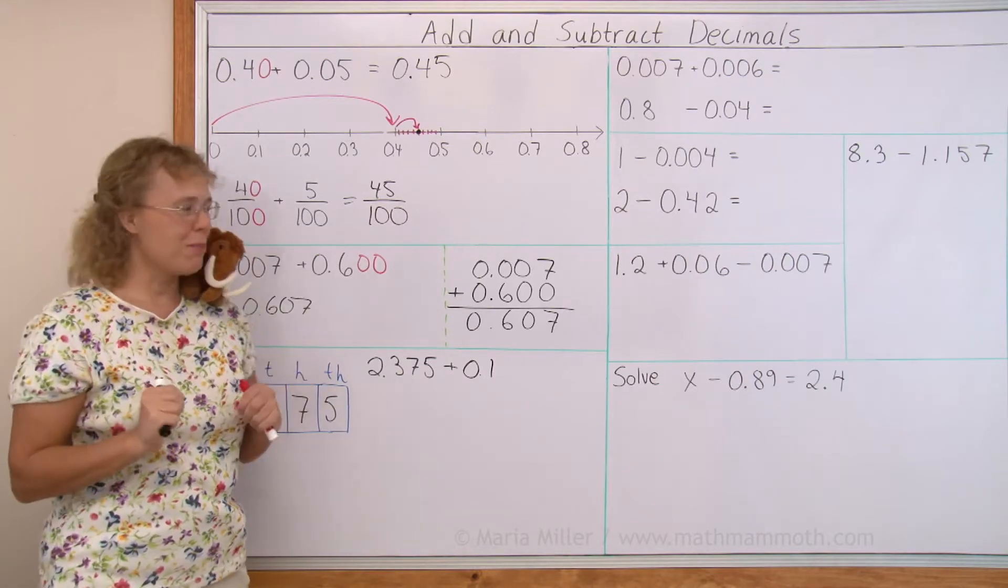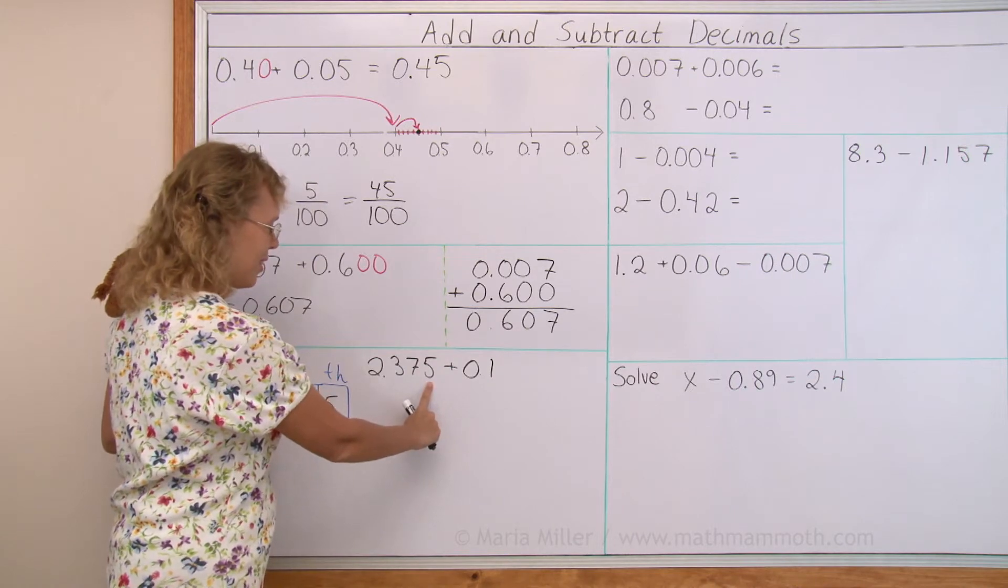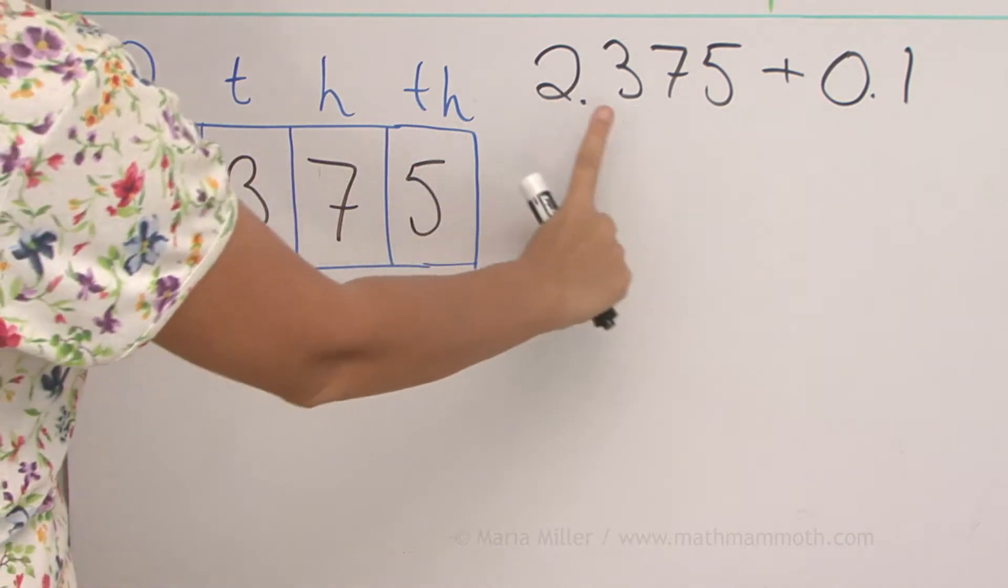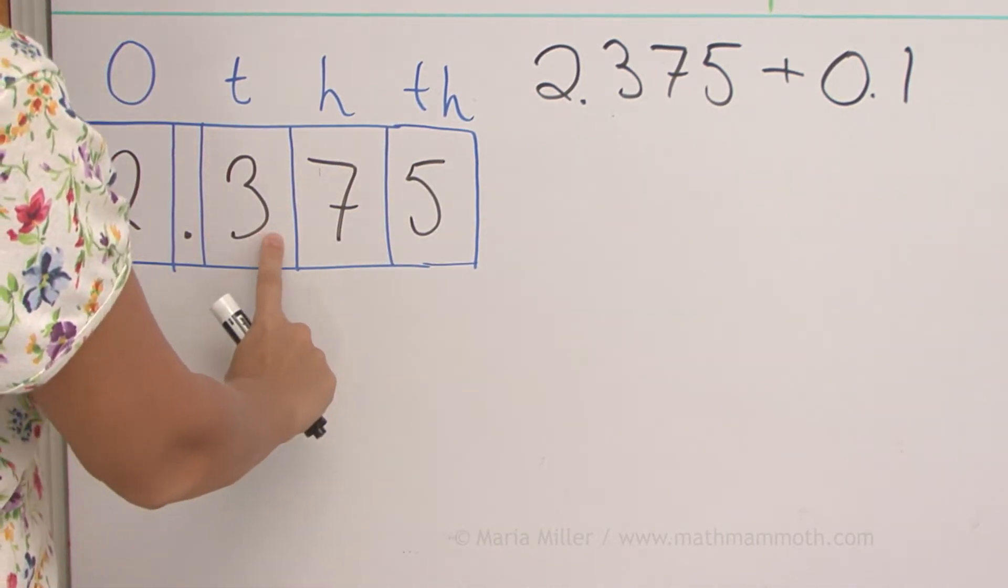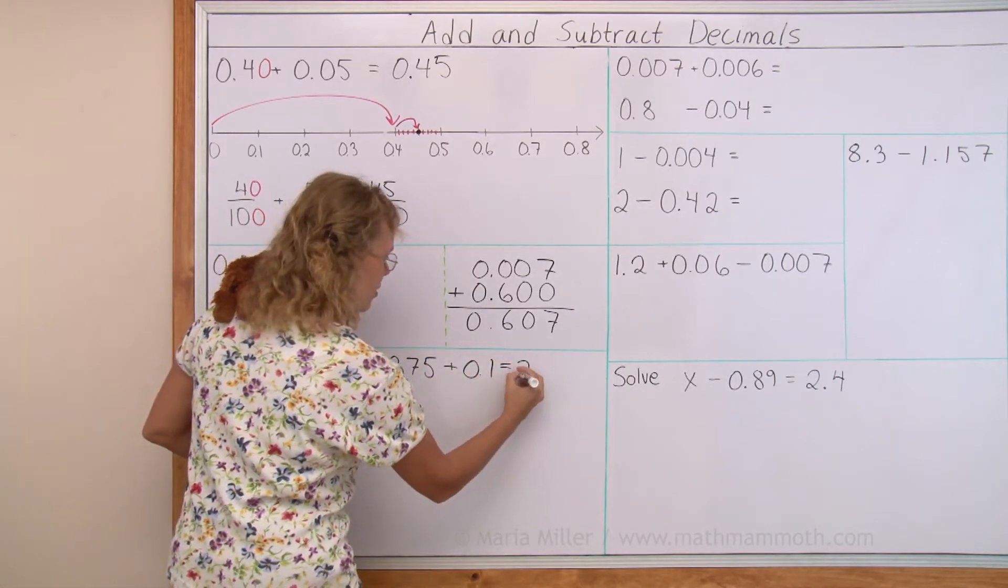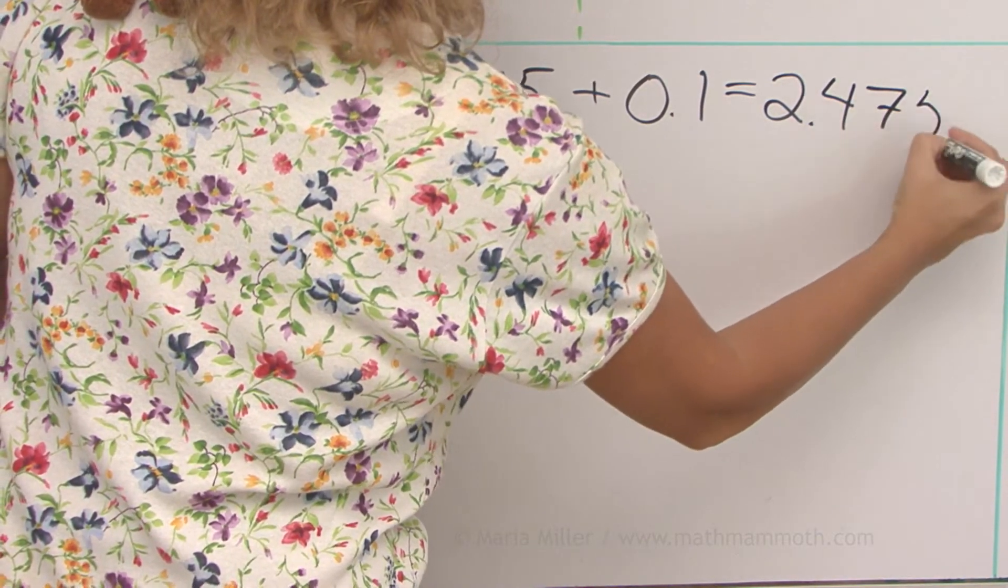Again, some students might think that you just add this one to this here. But that's not so. This is in the tenths place. So you need to add it to the tenths, to this three here. So this three gets increased by one, and we get two and four tenths and then seven hundredths and five thousandths.